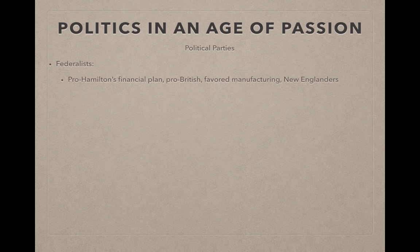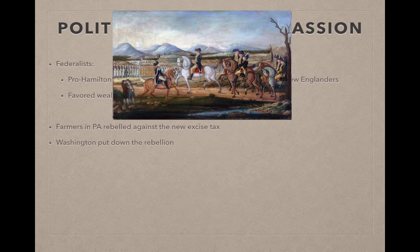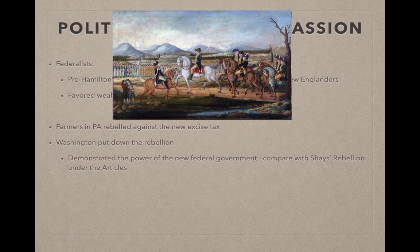Who were the Federalists? They tended to be pro-Hamilton's financial plan, pro-British because of trade, favored manufacturing, and were located in New England. They advocated for wealthy elites in public office and were wary of average everyday Americans voting. The Whiskey Rebellion occurred in Pennsylvania, where farmers rebelled against the new excise tax. Washington rode out on his white horse named Nelson and put the rebellion down, demonstrating the power of the new government under the Constitution — a contrast to the weakness of the federal government during Shays' Rebellion.